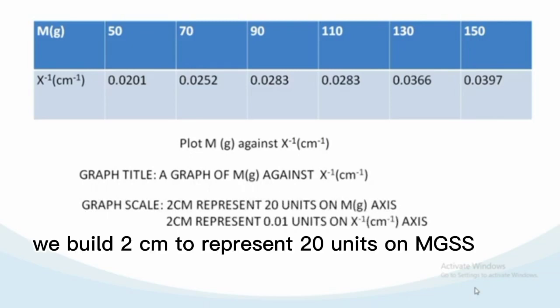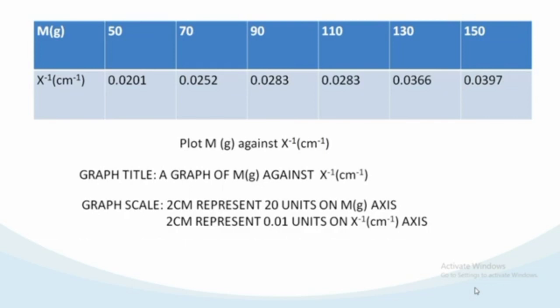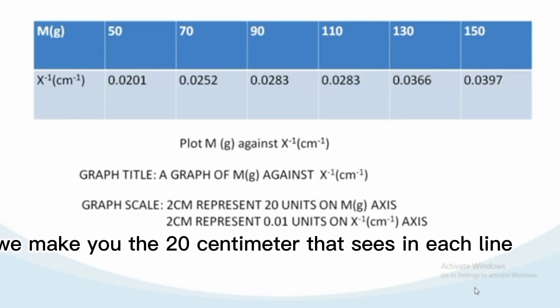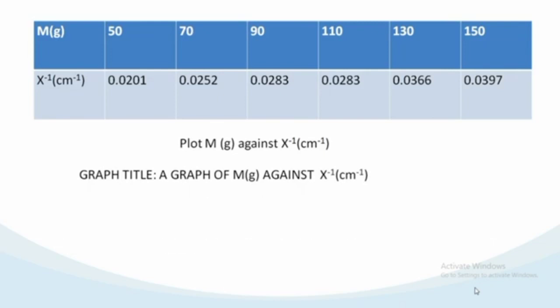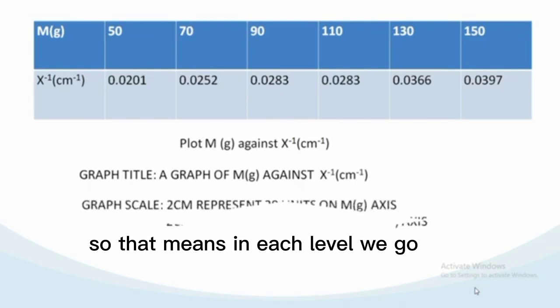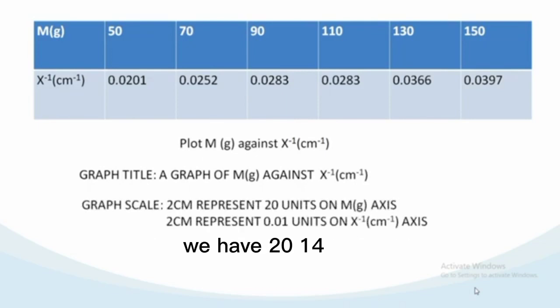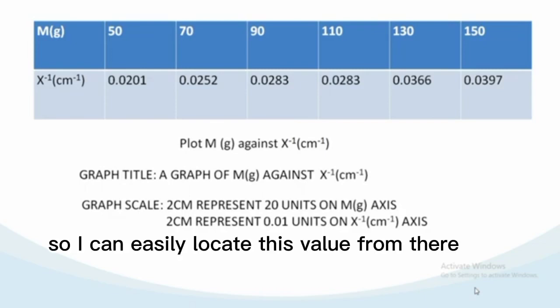That's for this first table. You can look at the scale choosing for this first table. We made it 20 centimeters. Let me go back to my graph. That means in each line of the graph we have 20, 40, 60, 80 and so on. So I can easily locate this value from there.